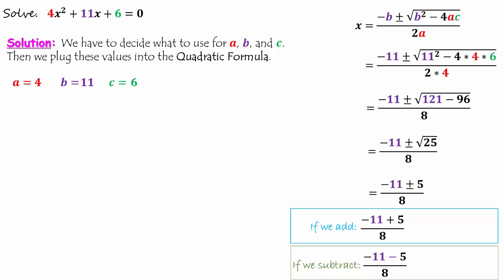If we add, we have negative 11 plus 5 over 8. If we subtract, we have negative 11 minus 5 over 8. Making these two calculations will lead to the solutions.